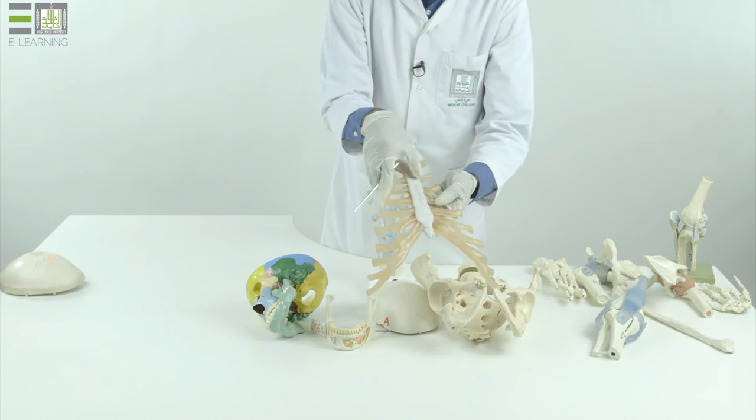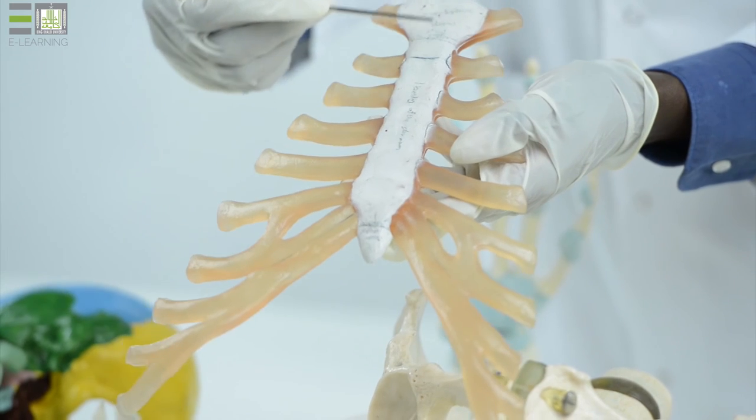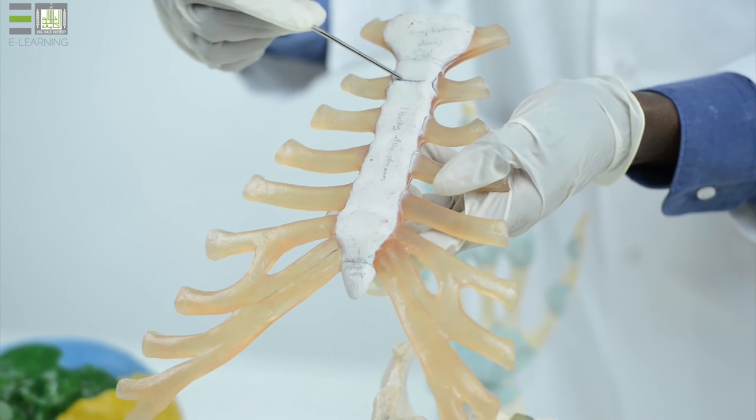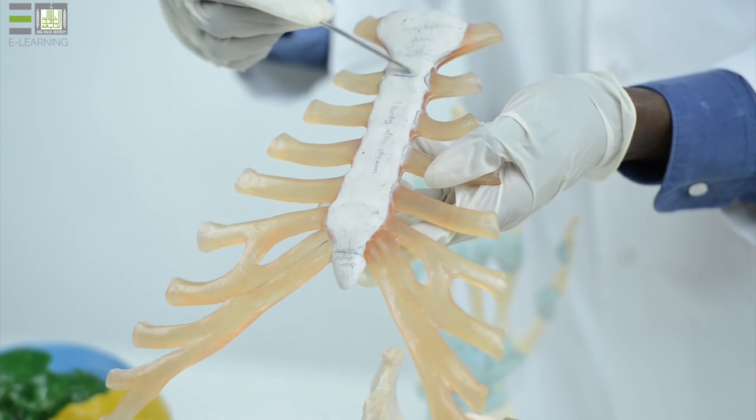In the sternum, between the manubrium and the body of the sternum, this manubriosternal joint is an example of secondary cartilaginous joint.